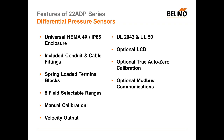Included are conduit fittings and cable fittings — everything you need to install the sensor, including pickup tubes, well-sensing static pressure pickup tubes, poly tubing, and conduit and cable fittings. They come with spring-loaded terminal blocks to aid in commissioning — easy to slide wires in, no tools needed. There are eight field-selectable ranges for each model, so one sensor does more. Each unit is capable of manual calibration, has a velocity output, is UL rated 2043 and UL 50, and there is an optional LCD, optional true auto-zero calibration, and optional Modbus communications.